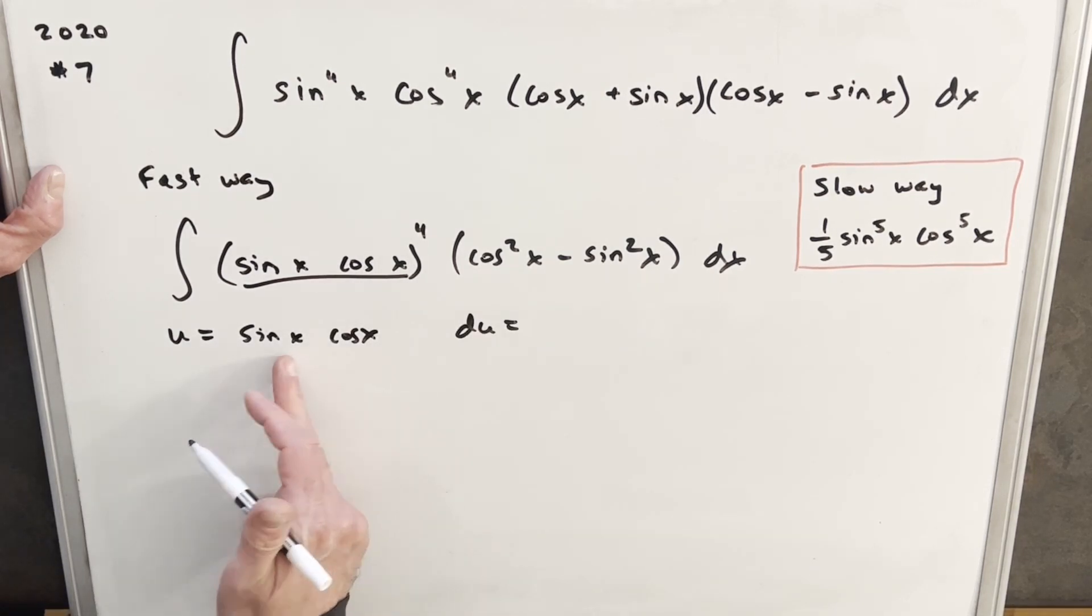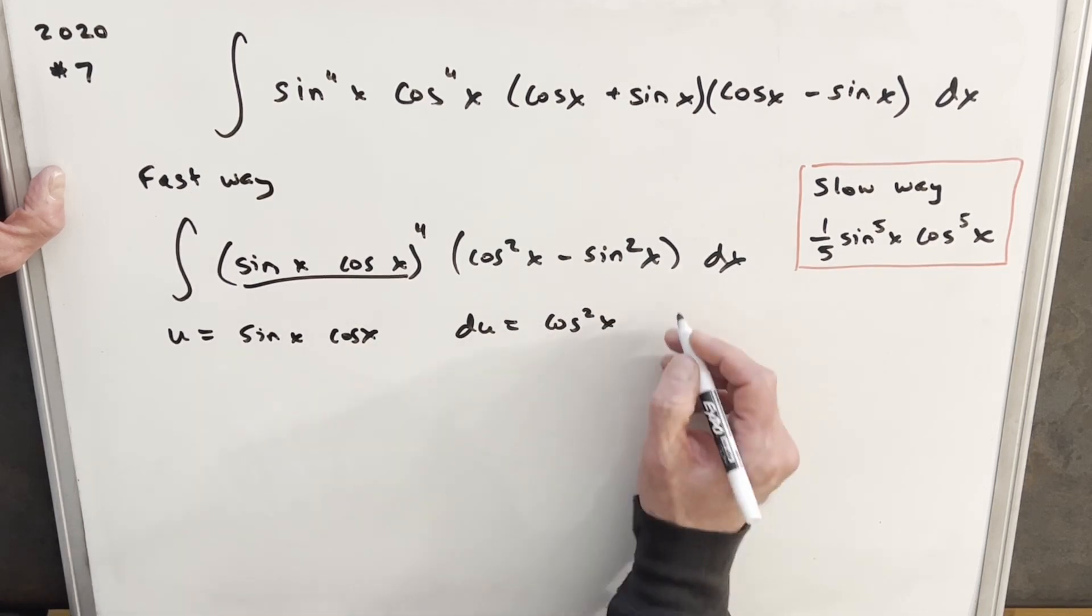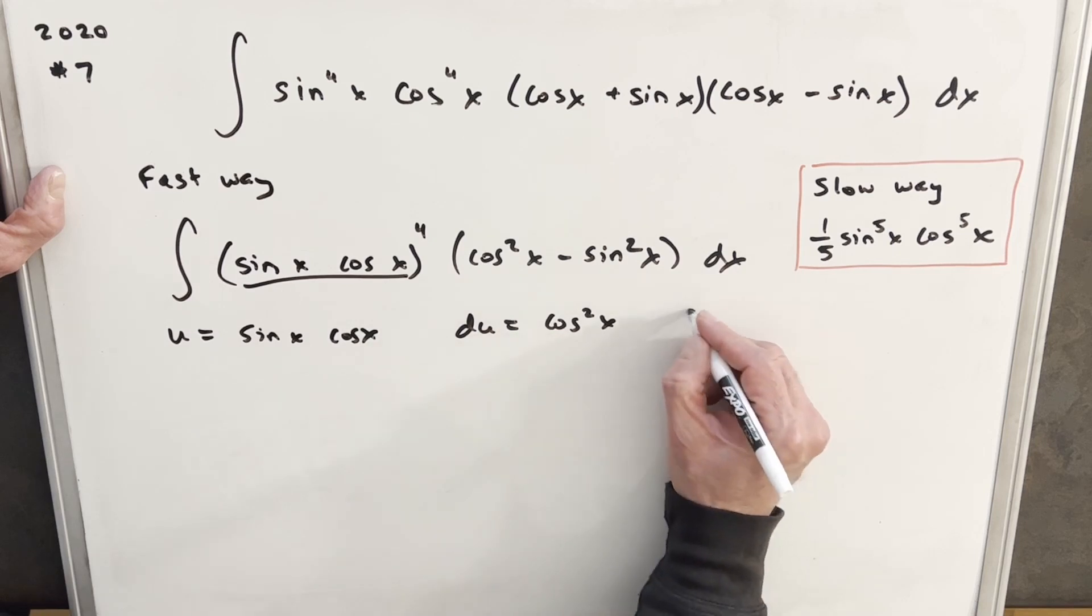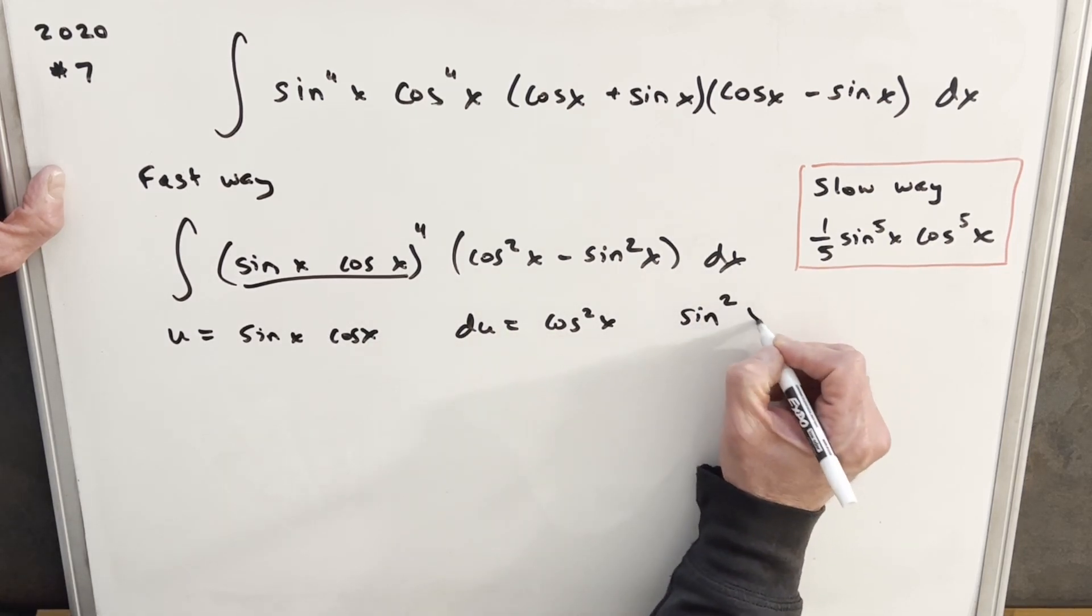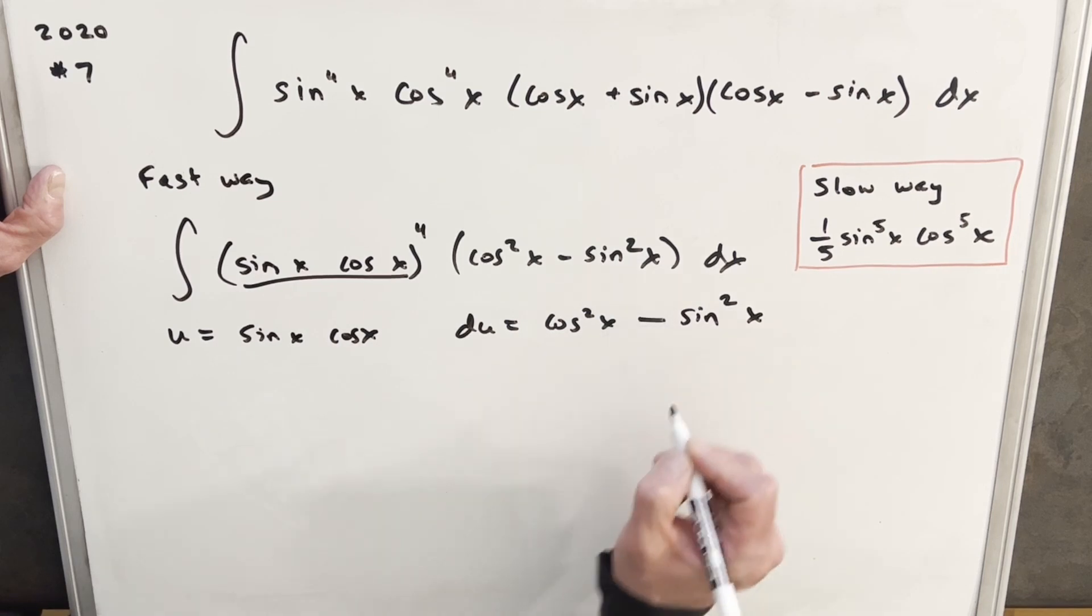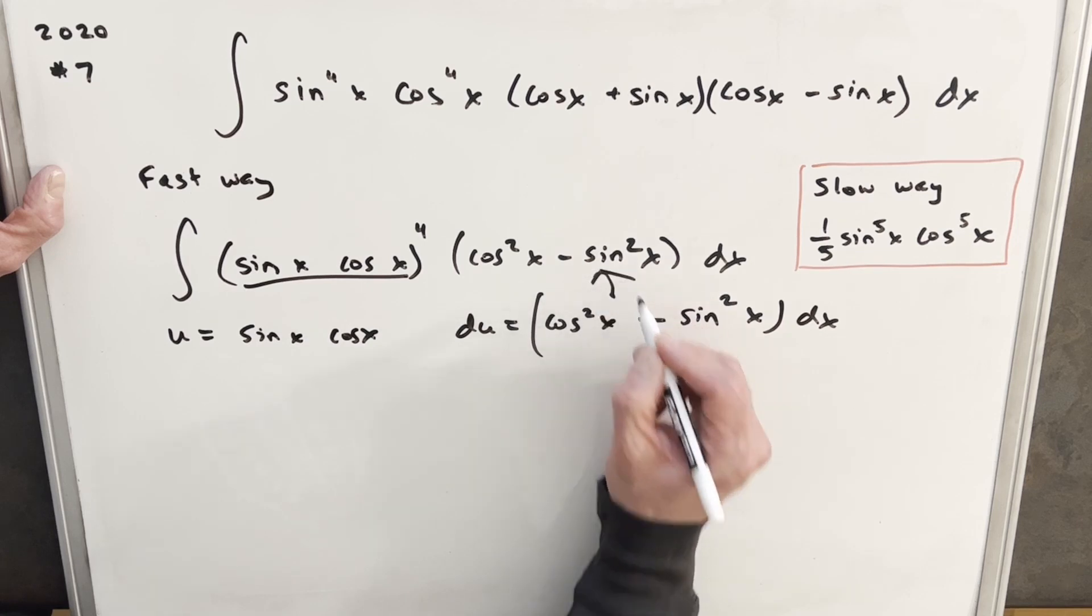So using the product rule on this, the derivative of sine is cosine times a cosine is cosine squared x. And then we're going to have, we're going to keep our sine x. The derivative of cosine is minus sine x. So we'll have a sine squared x, but we need to keep that minus sign. And we'll notice that this is exactly what we have right here.